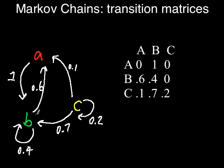This can be seen in the diagram. From B to A is 0.6, from B to B is 0.4, and there is no arrow going from B to C. Notice that all of the numbers in this transition matrix are within the range 0, 1.